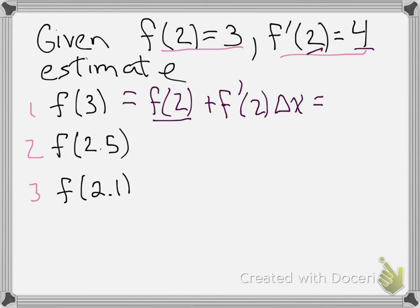Now f of 2 we were given as 3, f prime of 2 we're given as 4, and because we're moving from 2 to 3 in the x direction, we're moving 1 unit, so we end up with 3 plus 4 or 7 as our estimate. We should probably have a squiggly equals because we're estimating.